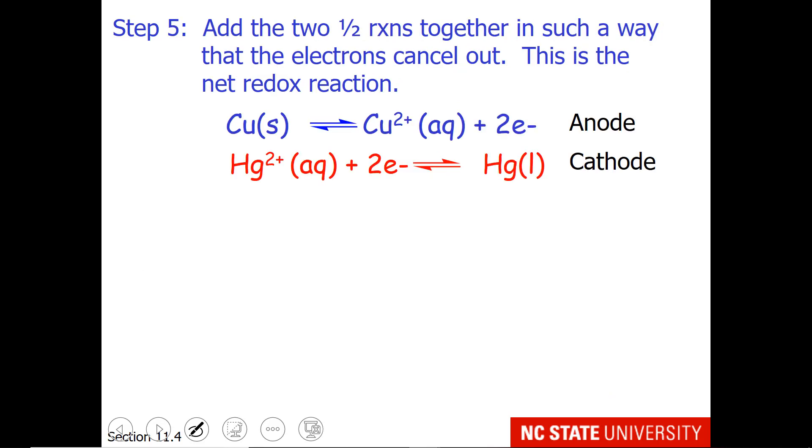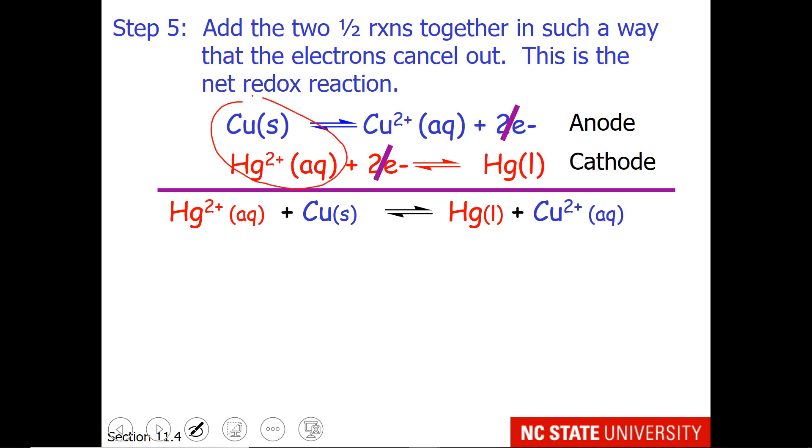You might be asked to write the net redox reaction. So you simply have to add the two reactions together such that the electrons cancel out. In this case it's pretty easy because we have two electrons in and two electrons out. So we just have to take our reactants and write them down here on the reactant side, and our products and write them down here on the product side. That is our net balanced redox reaction.